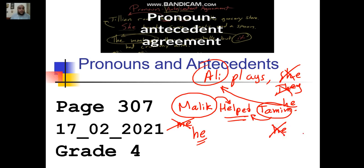The perfect object pronoun for Tamim — because he is a male, because he is singular — it's going to be him. So, he helped him.